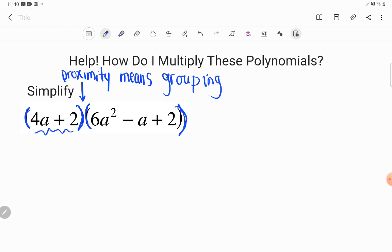But look at this grouping, 4a plus 2. We know we're only allowed to add and subtract the same kinds of things. And in the world of algebra, that means like terms. I can only add a terms with other a terms or plain old numbers with other plain old numbers. These are not like, and so they cannot combine.